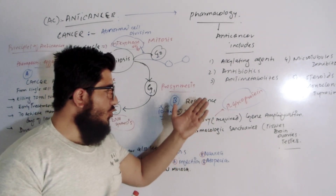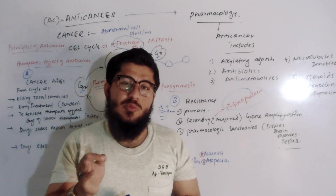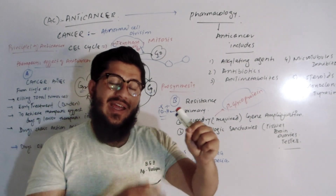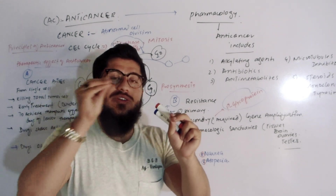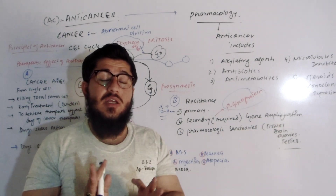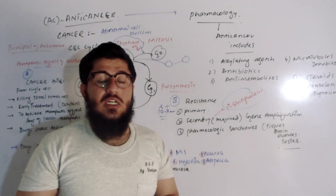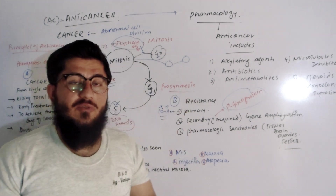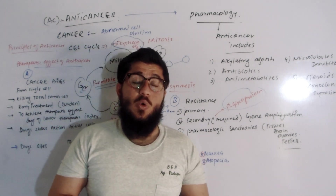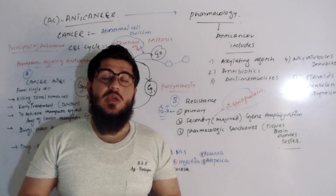The third mechanism is pharmacological sanctuaries. This means that the medications or chemotherapy drugs do not reach specific tissues where the cancer is located. For example, in the brain, drugs cannot reach due to the blood-brain barrier, which blocks most drugs from entering the brain. Similarly, drugs do not reach the ovaries and testes, so ovarian cancer, testicular cancer, and brain tumors cause chemotherapy to fail. This concludes our general discussion on cancer pharmacology, and we will continue in the next videos.